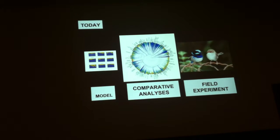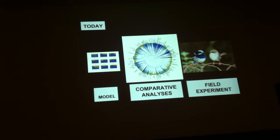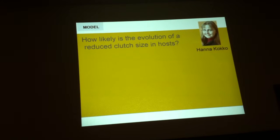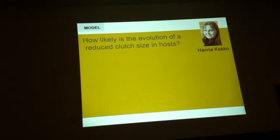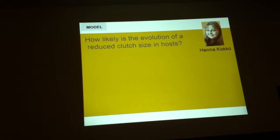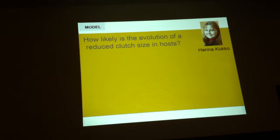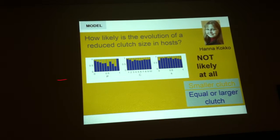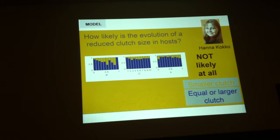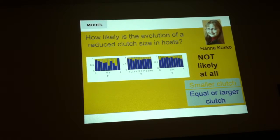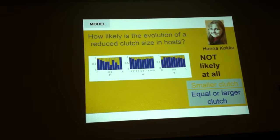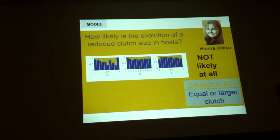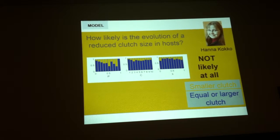Today I'm going to show you very briefly the results of a model and focus on a comparative analysis and a field experiment, trying to understand whether there is actually an evolution of tolerance by reducing clutch size in hosts of avian brood parasitism. With Hannah Coppola, my post-doc supervisor, we wanted to know by developing a model how likely it would be for a reduced clutch size to evolve in hosts. In blue we see the number of cases where it would produce higher fitness to evolve a large clutch size, and in yellow the cases where it would be better to have a smaller clutch size. The yellow area is much smaller than the blue one. So there is no support so far for the evolution of tolerance, at least from the model.